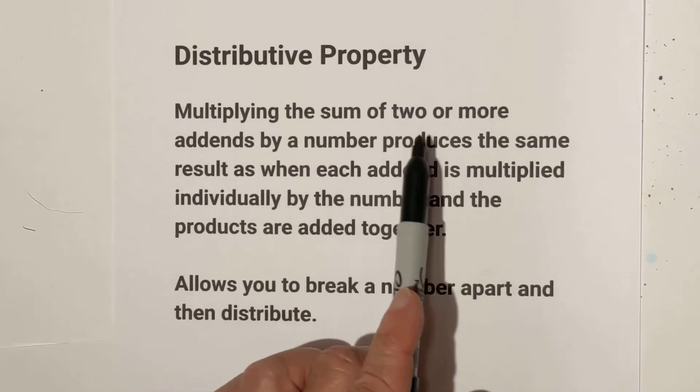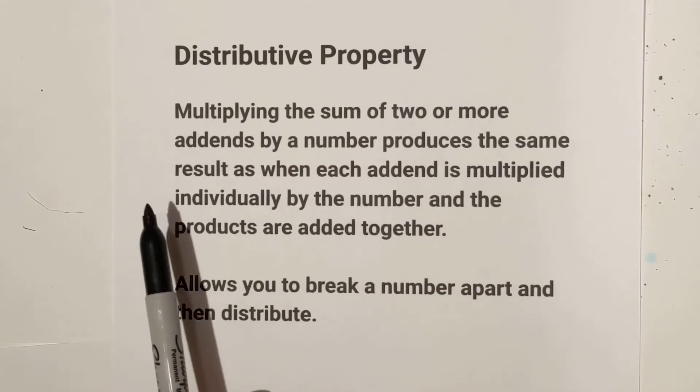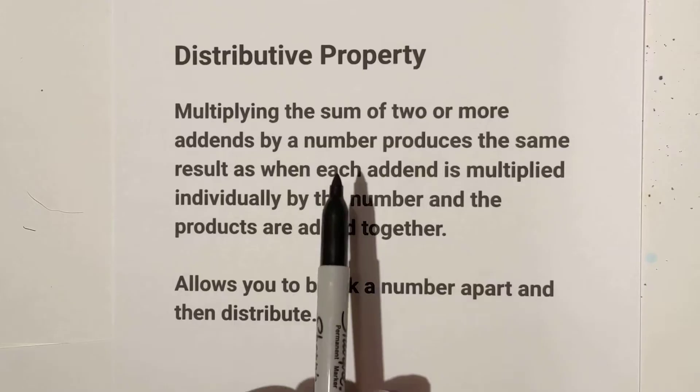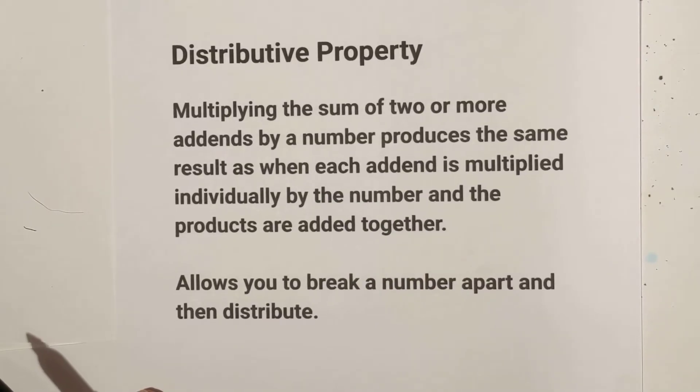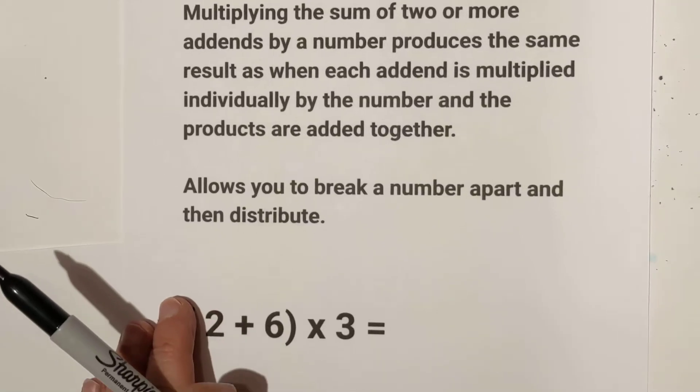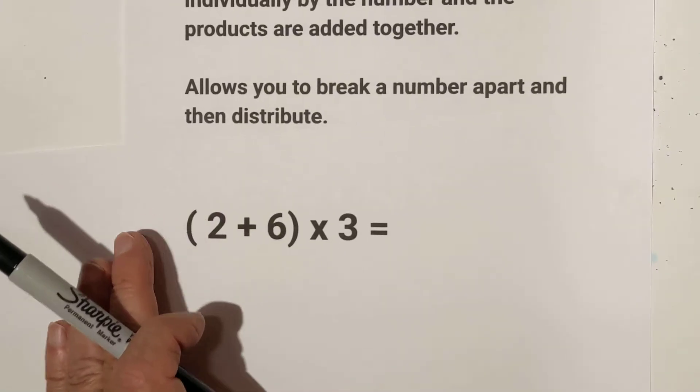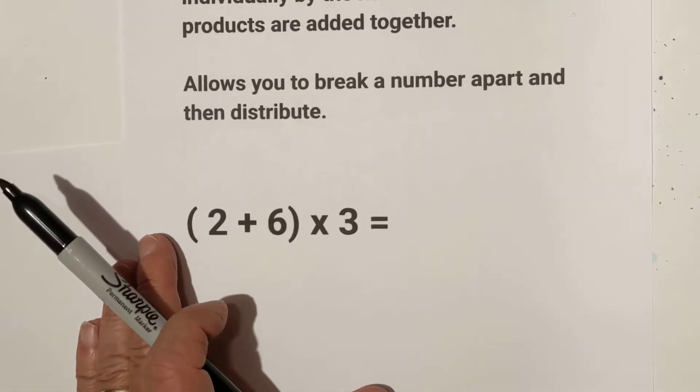Multiplying the sum of two or more addends by a number produces the same result as when each addend is multiplied individually by the number and the products are added together. This allows you to break a number apart and then distribute.